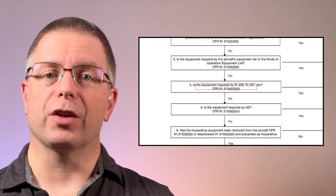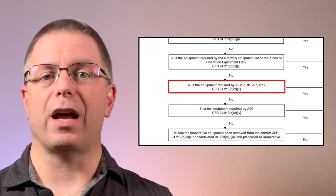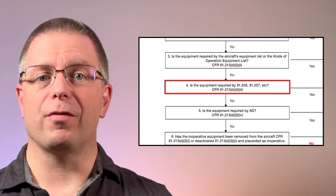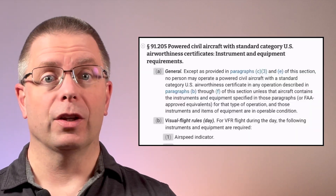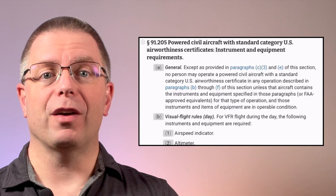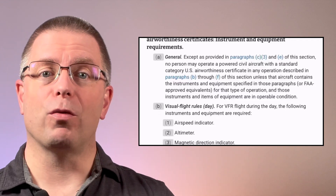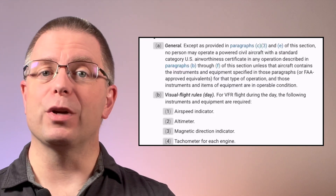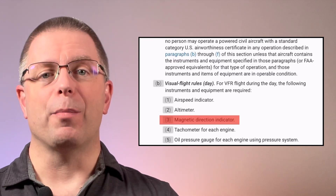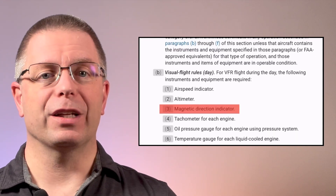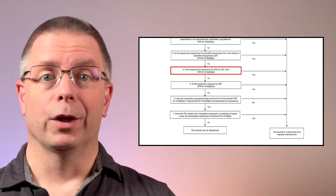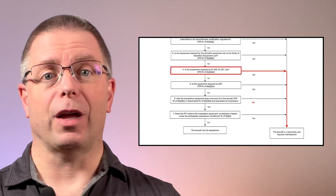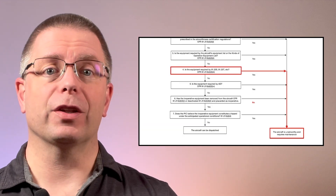Fourth, is the compass required by 91.205 or 91.207? It is. 14 CFR 91.205(B)(3) notes that a magnetic direction indicator is required, so we can't make this flight without first fixing the compass.